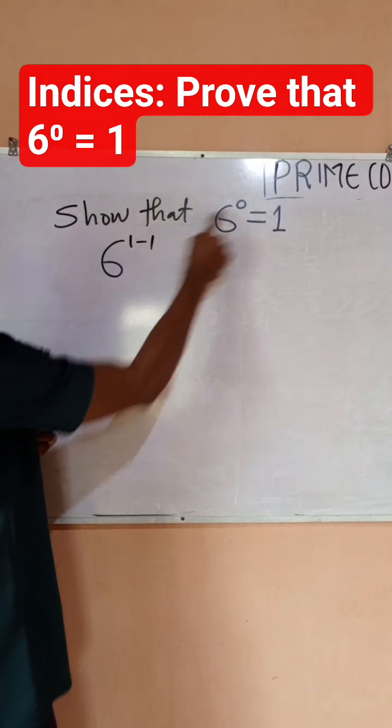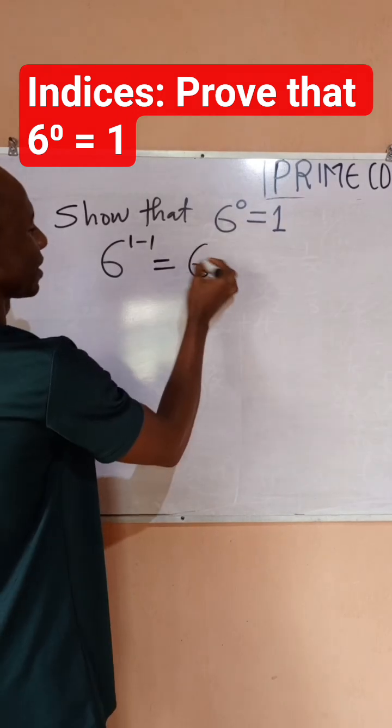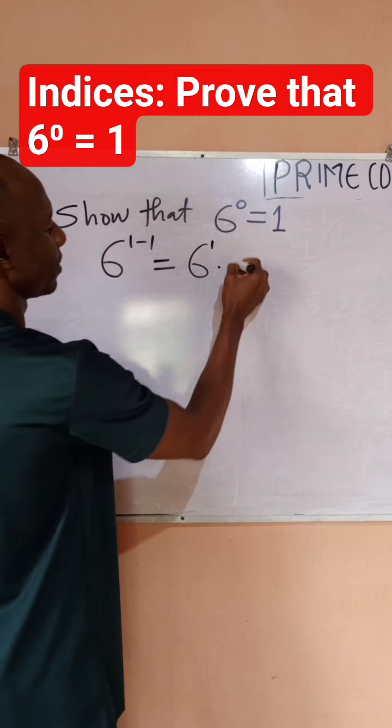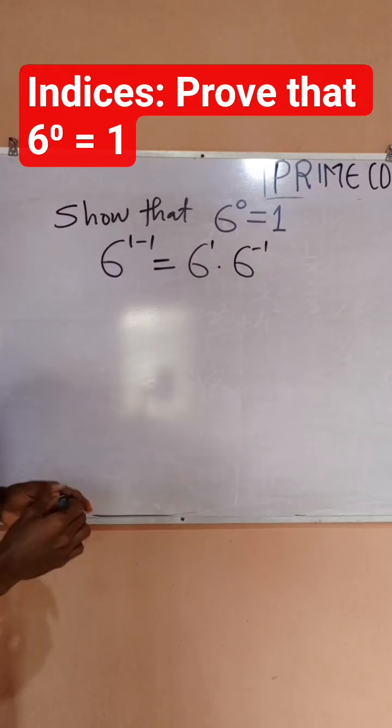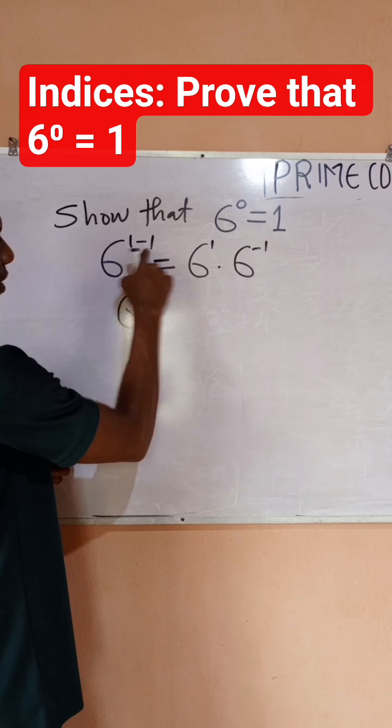So this is equal to 6 raised to power 1 times 6 raised to power minus 1. I can split this like this so that this is still 6 raised to power 0.